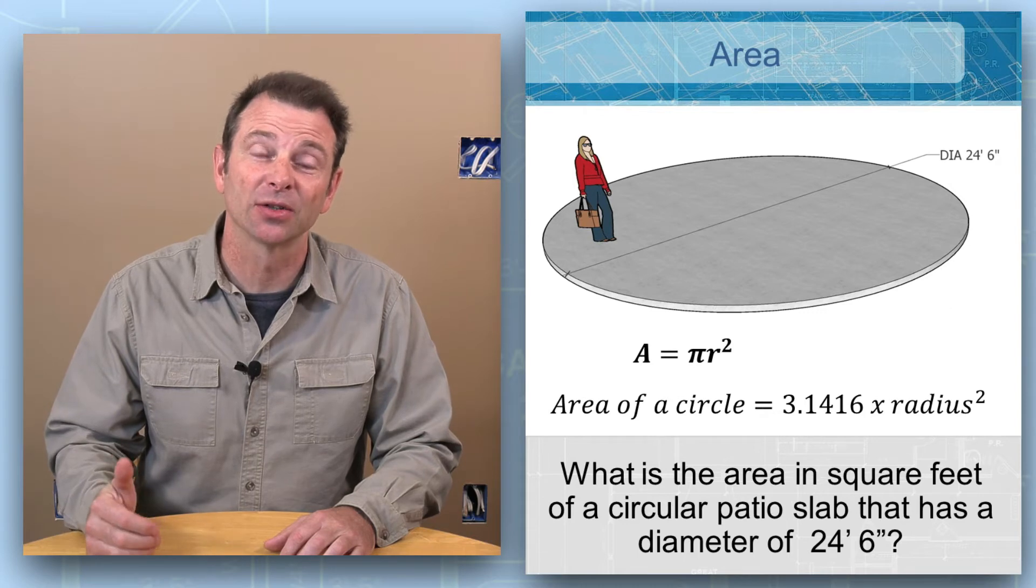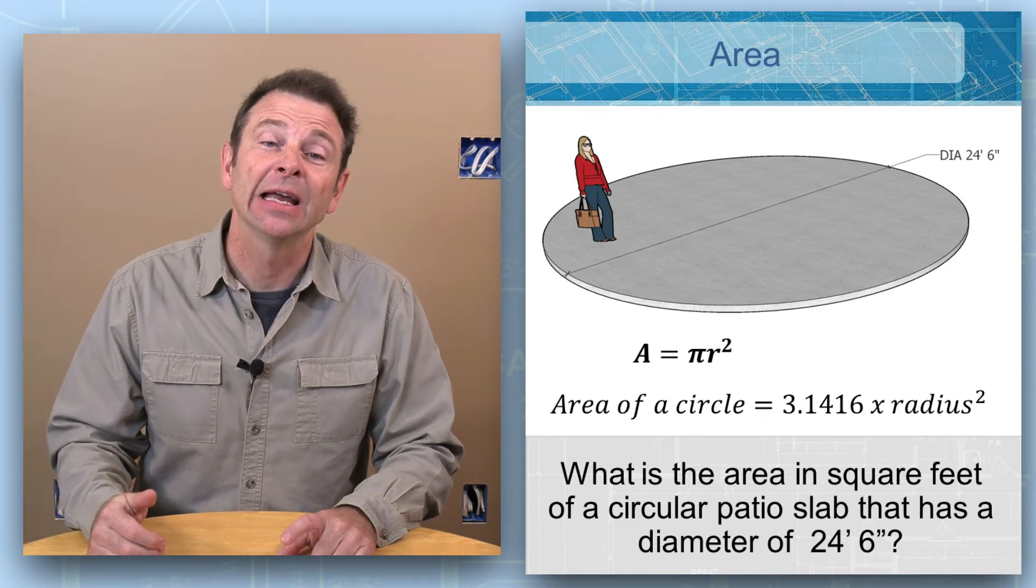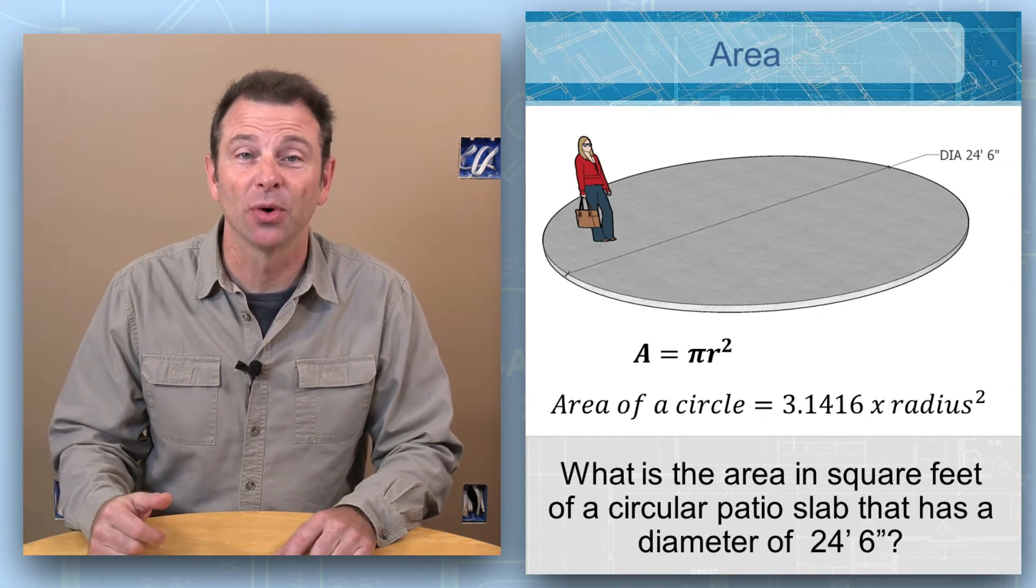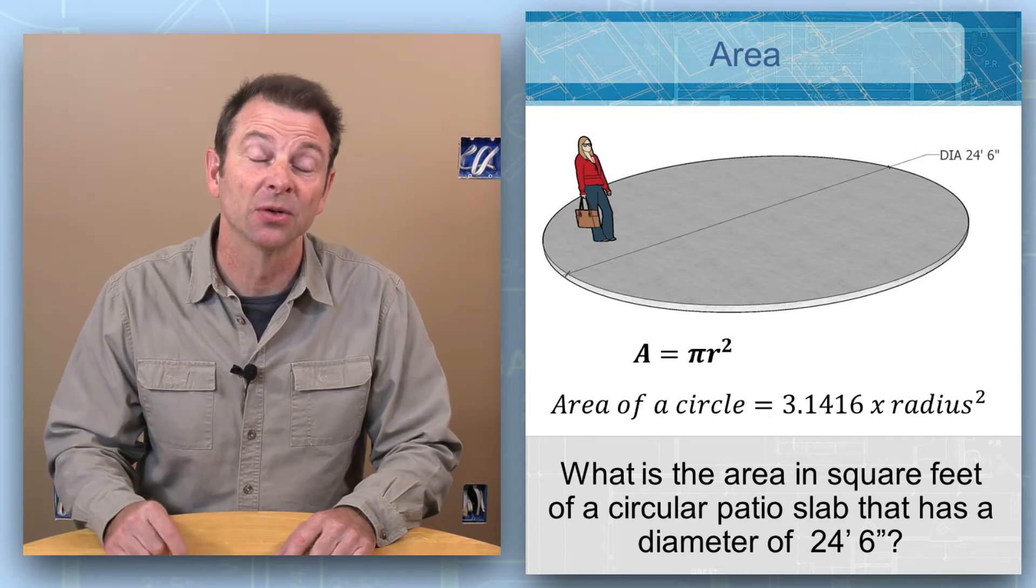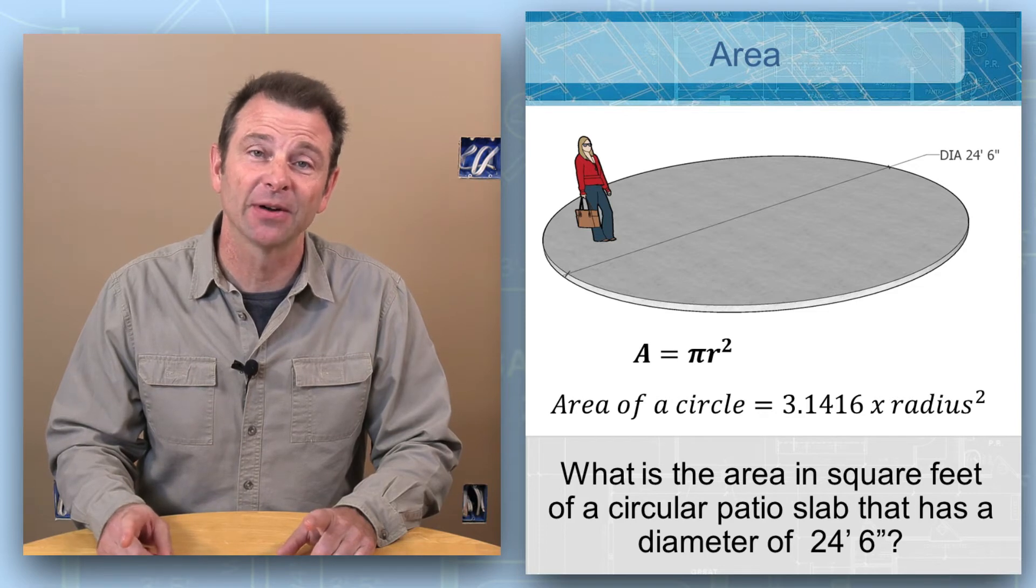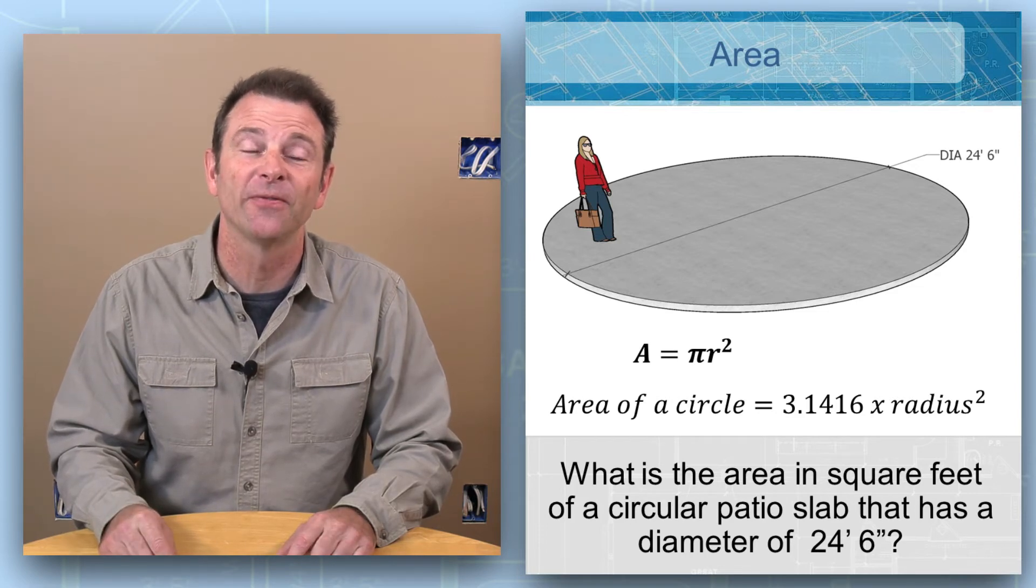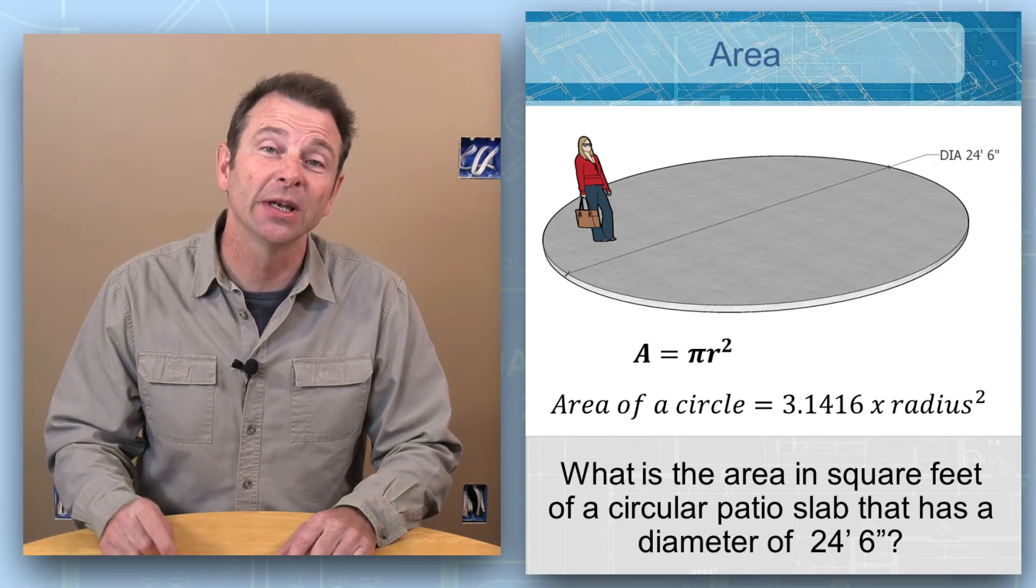To solve for the area of a circle we can use a very basic formula, which is A equals pi r squared. That is, area equals pi, which is 3.1416, times the radius of the circle squared.